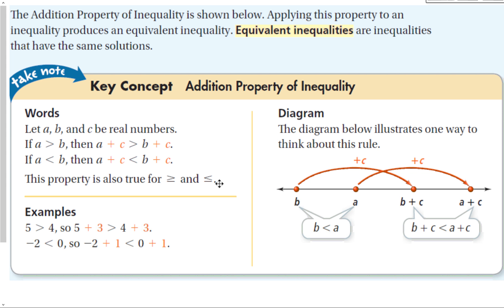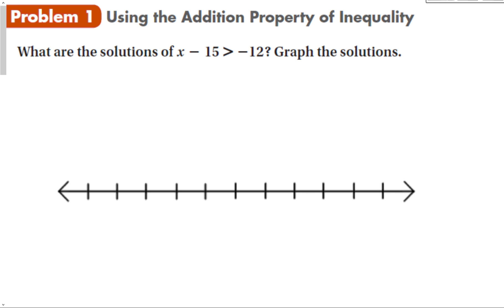Looking at the diagram below to illustrate this rule: if we take b and add c to it, and a is greater than b, if we add the same c to both, the result is still less than the other. For example, 5 is greater than 4, so 5 plus 3 is greater than 4 plus 3 — that's 8 is greater than 7. The same thing works with negative numbers. Basically, if we add the same thing to both sides of the equation, it will stay balanced, whether it is an equality or an inequality.